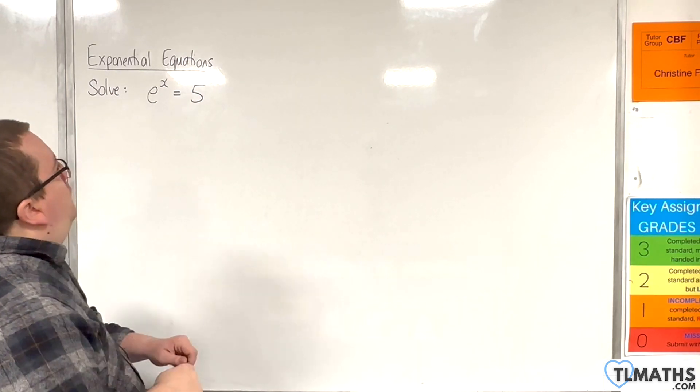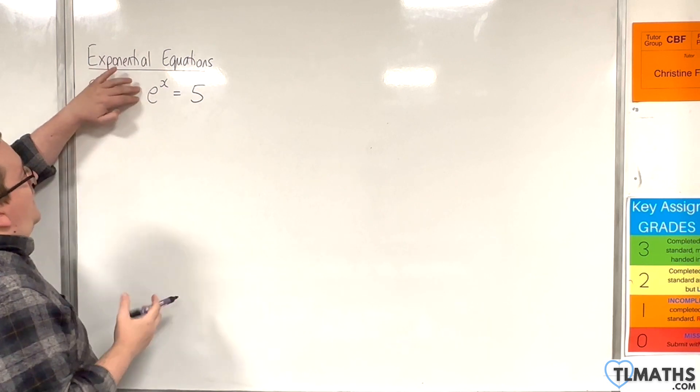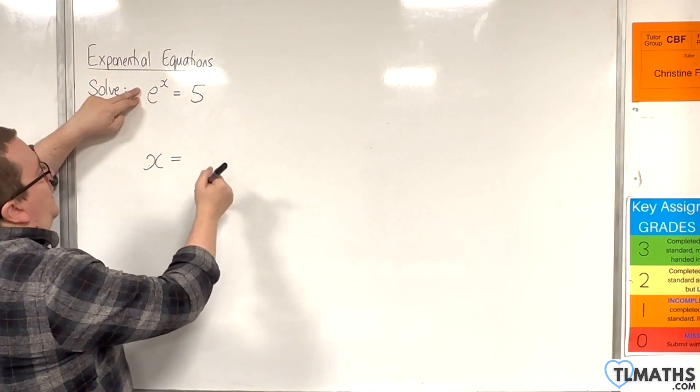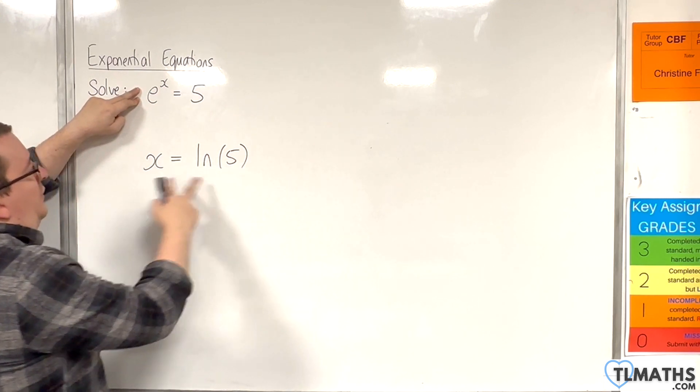So converting from exponential to logarithmic form, we would say that x is going to be equal to log base e of 5, which of course is ln of 5.